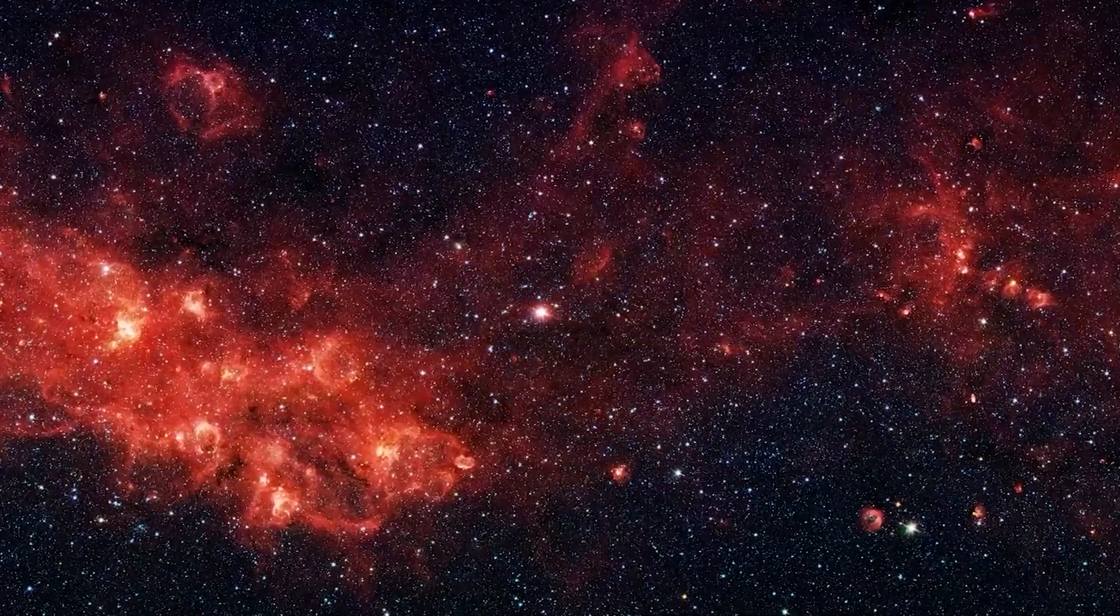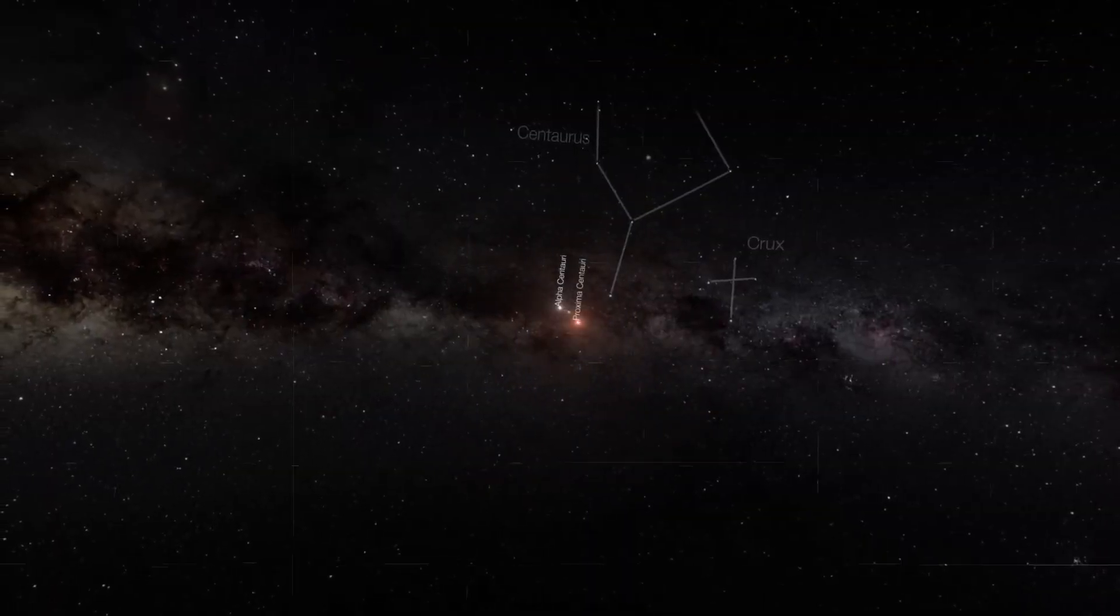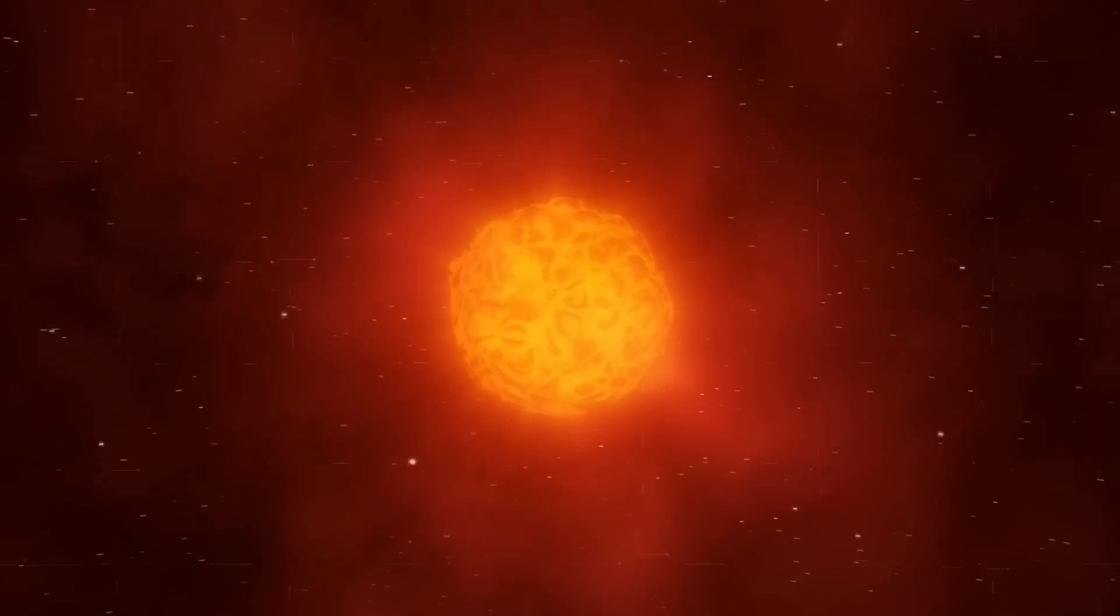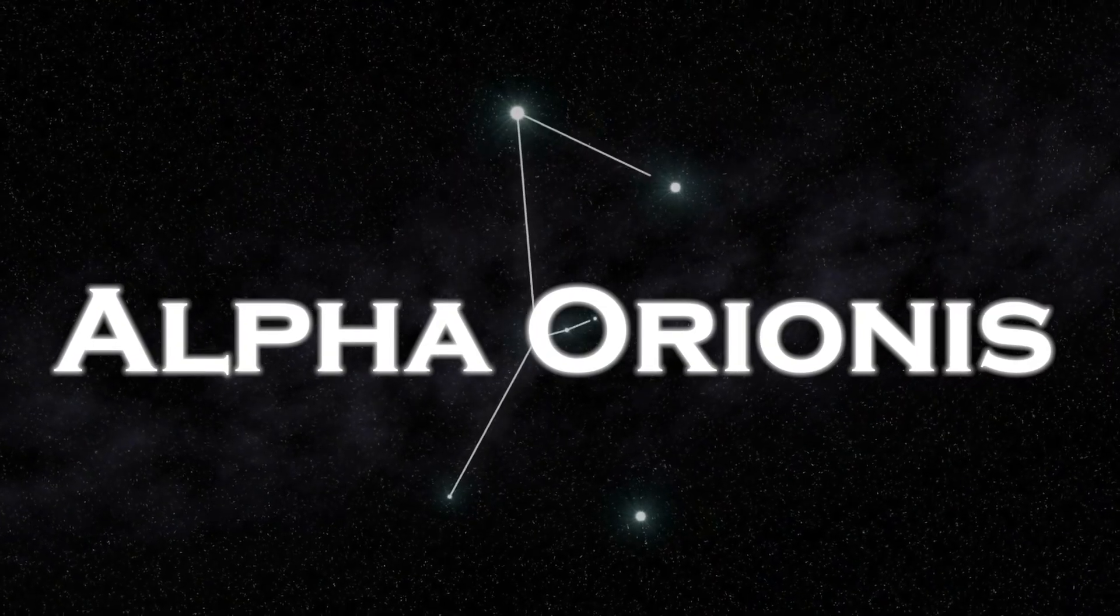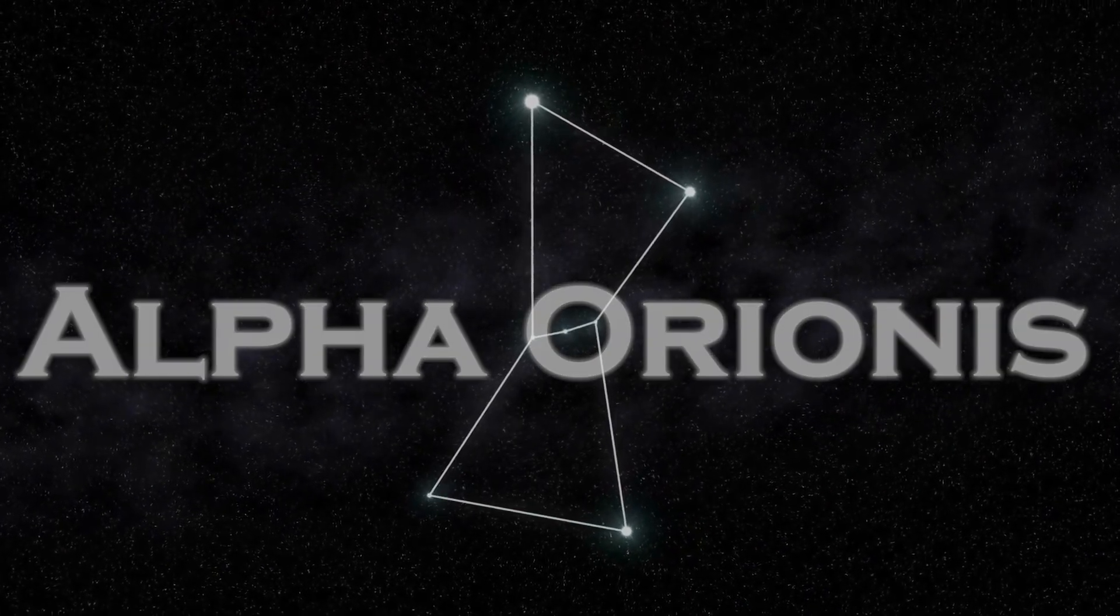The glowing ruby star, Betelgeuse, lies on the upper right shoulder of Orion, the Hunter. You may recognize it by its other name, Alpha Orionis.